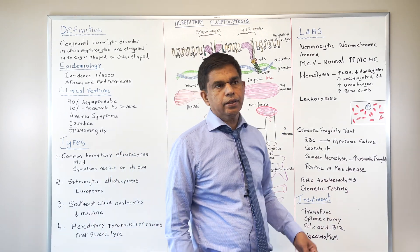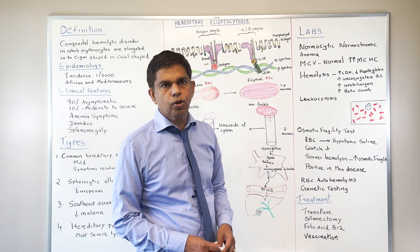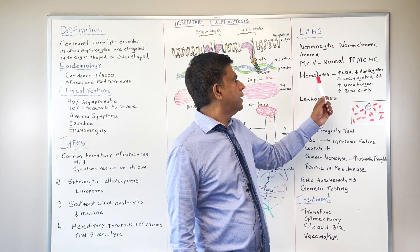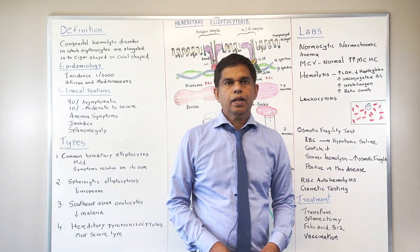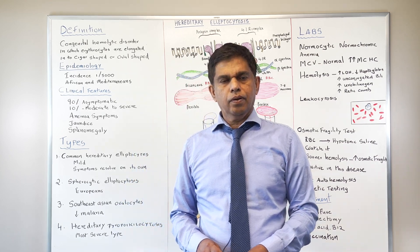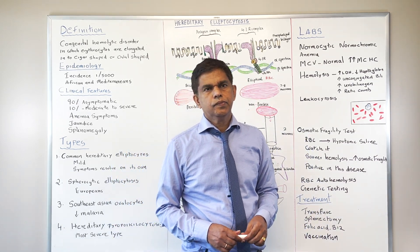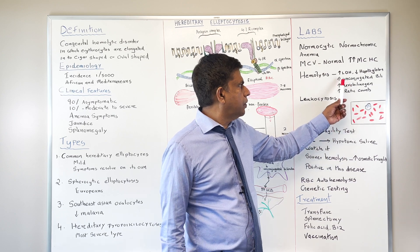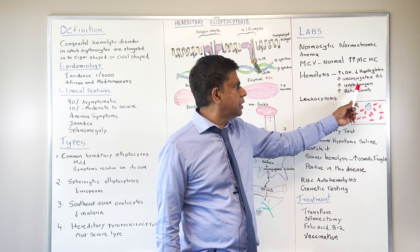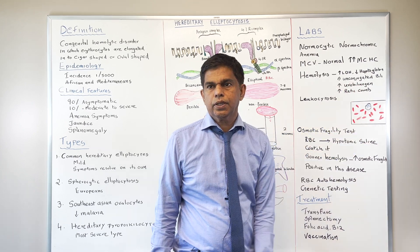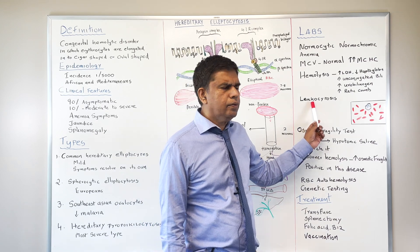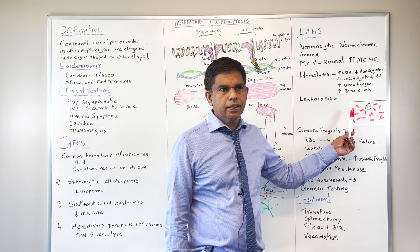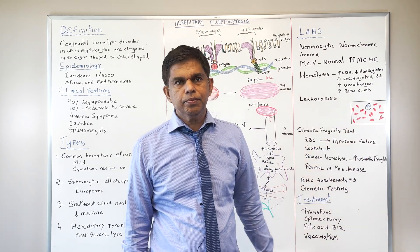Looking at the labs: most patients have normocytic anemia — this is a hemolytic anemia picture. MCV is normal with increased MCHC. The hemolysis labs include: increased LDH, decreased haptoglobin, increased unconjugated bilirubin, increased urobilinogen, and reticulocyte count greater than 3.5%. You can also have leukocytosis. The peripheral smear will show cigar-shaped cells.